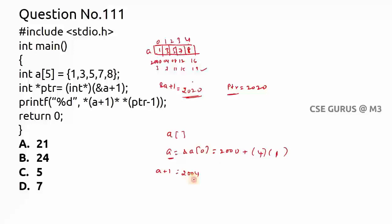Similarly, a plus three would be 2000 + 4×3 = 2012, and you can verify a[3] starts at 2012. So a plus one gives the address 2004. Dereferencing with the pointer operator means the value inside address 2004, which is 3. So *(a+1) equals 3.